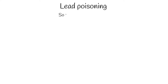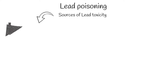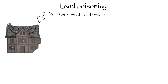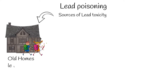Lead intoxication is an important problem in many countries. Millions of young children live in older homes in which lead-based paint was previously used. As this old paint ages, it peels, flicks, and crumbles into dust, and young kids commonly get lead intoxication.